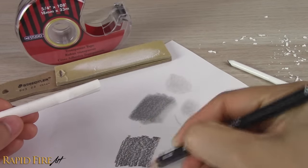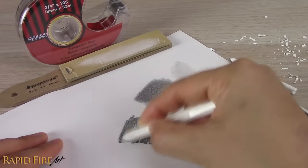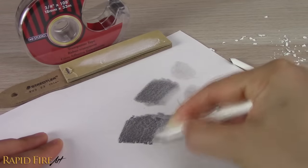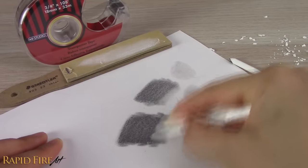A blending stump is a tool made of tightly rolled paper. Its soft texture can help smooth out your drawing and with some graphite residue stuck to it, you can even use it to draw and shade.